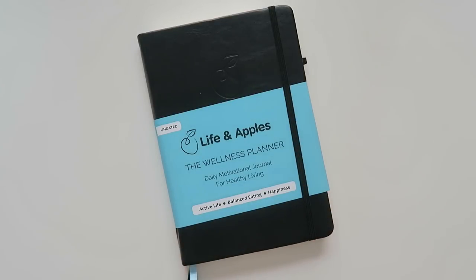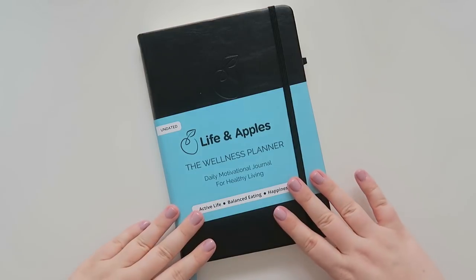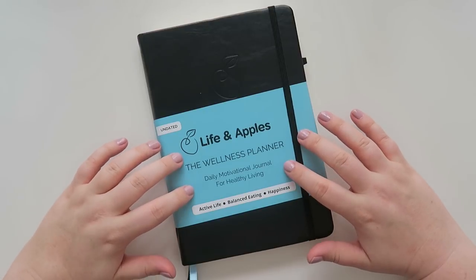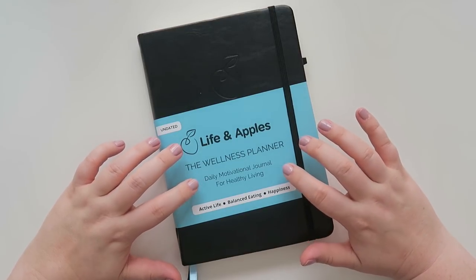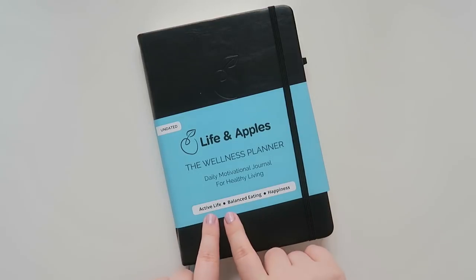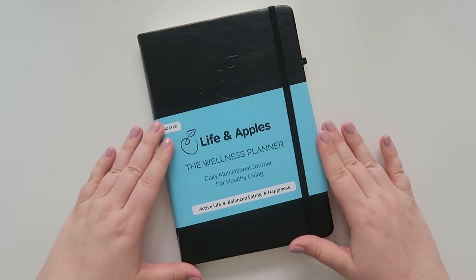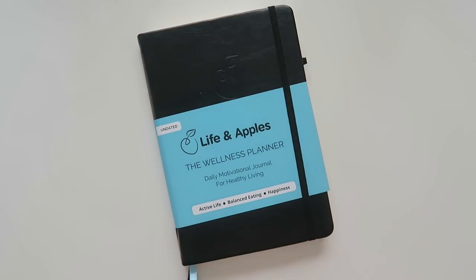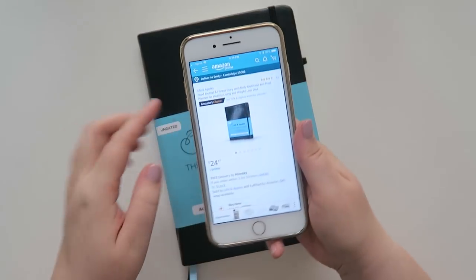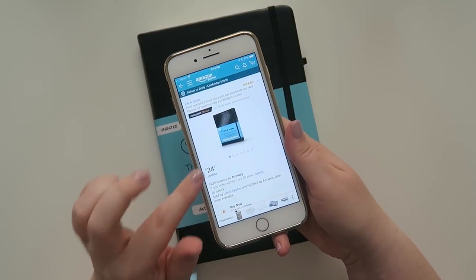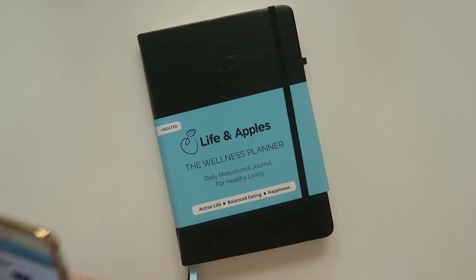Well hello my friends and welcome back to my channel. Today we are going to be doing a first impressions of a planner that was sent to me by Life and Apples. This is the undated Life and Apples Wellness Planner. It's a daily motivational journal for healthy living and it says active life, balanced eating, and happiness. This is something that is available on Amazon. I will leave a link below for you guys. I am currently looking on my Amazon and it is retailing for $24.97. So I just wanted to let y'all know that.